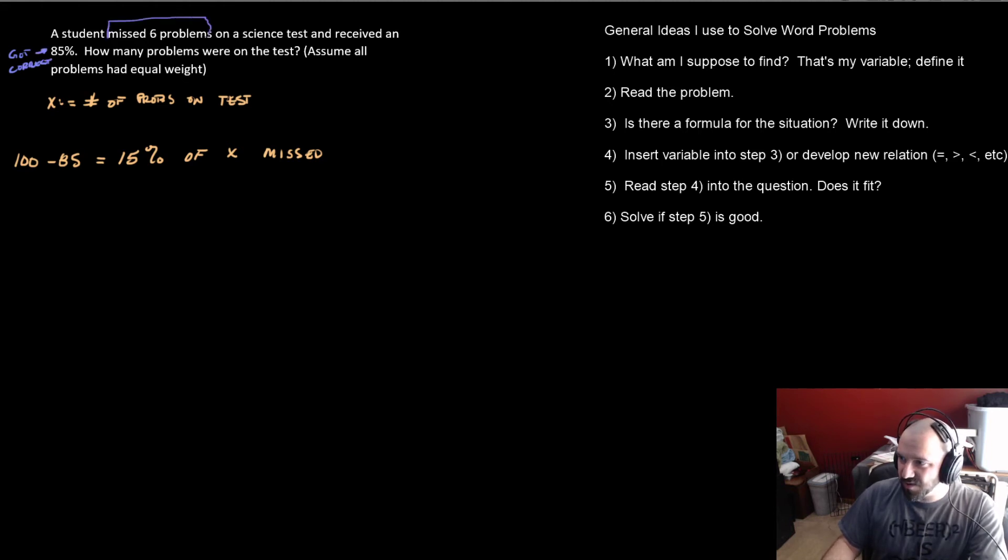One is talking about it in the positive, the 85%. One is speaking of it in the negative, the missed six problems. So you have to get them both to agree. Whether or not you subtract off the missed six problems to find out how many problems you got right or you subtract off the 85% that you got correct to find out you missed 15%, it doesn't matter which way you go. So I find this way to be slightly easier.